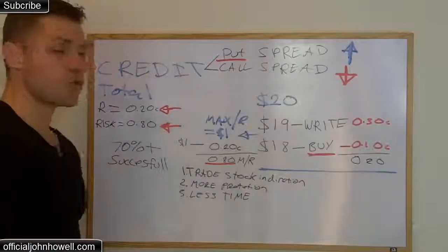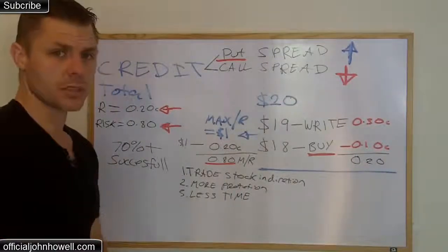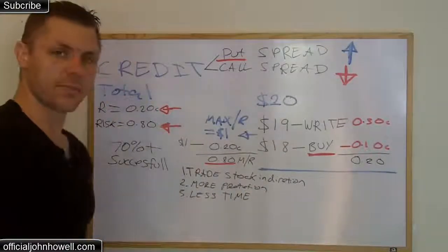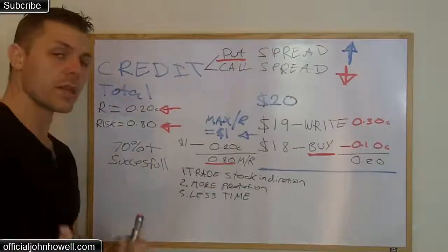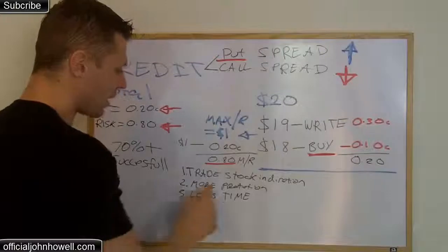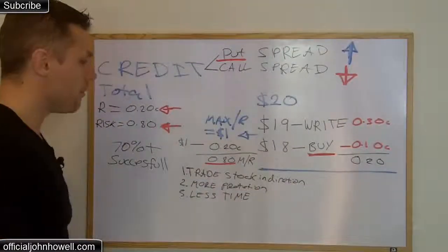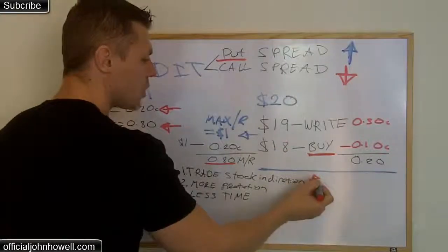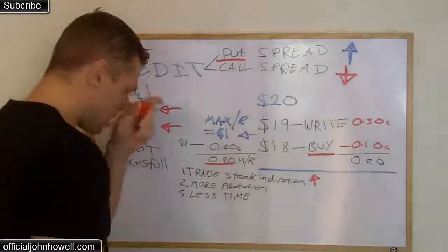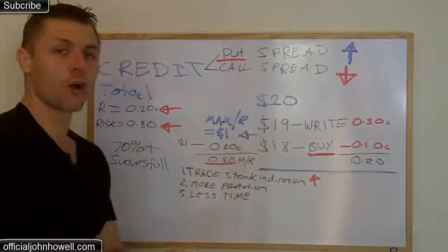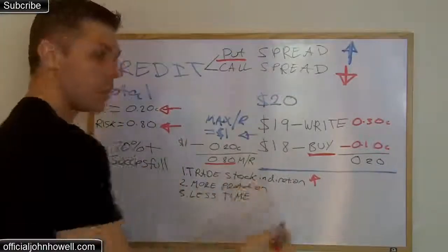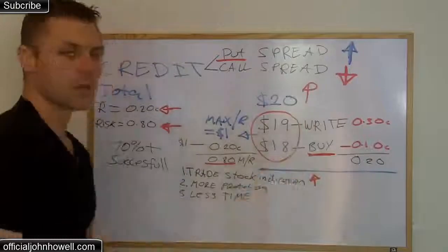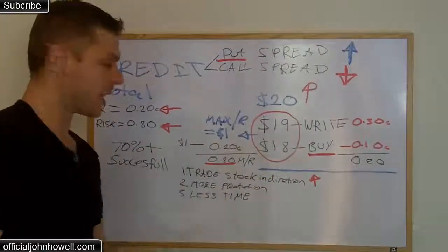I do trade spreads myself, but I use an option scanner that scans over 2,000 stocks and over 100,000 different options. Here are the top three things you need to do if you're going to trade the credit spread. First: trade the stock in the direction of the chart. If we're trading a put spread — a bullish strategy — the chart needs to show the price going up. If the stock goes up, it moves away from our spread and we can close it out worthless and keep our profit.